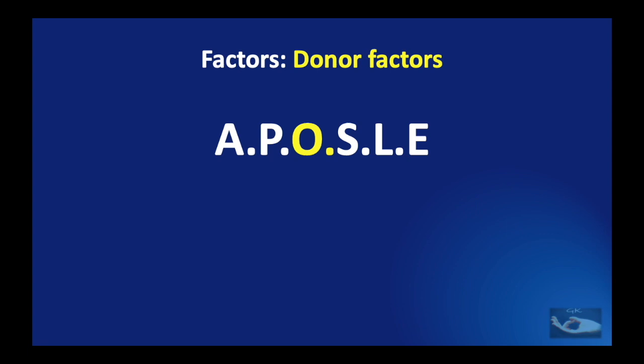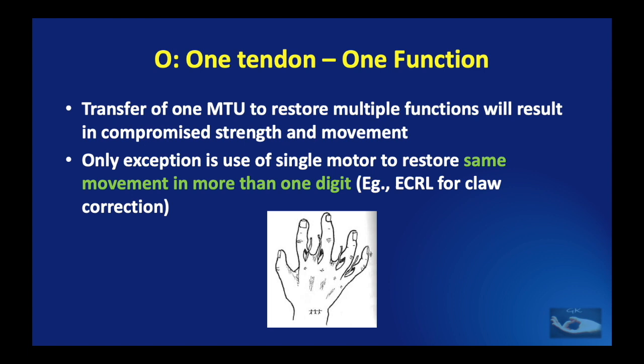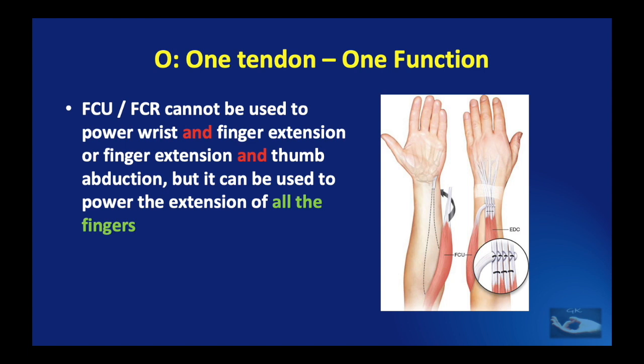After considering amplitude and power, we need to consider the O of this mnemonic, which stands for 'one tendon, one function.' Transfer of one motor tendon unit to restore multiple functions will result in compromised strength and movement. The only exception is the use of a single motor to restore the same movement in more than one digit — for example, use of the extensor carpi radialis for claw correction in the EF4T procedure. Under this principle, the flexor carpi radialis cannot be used to power both wrist and finger extension or finger extension and thumb abduction, but it can be used to power the extension of all the fingers.